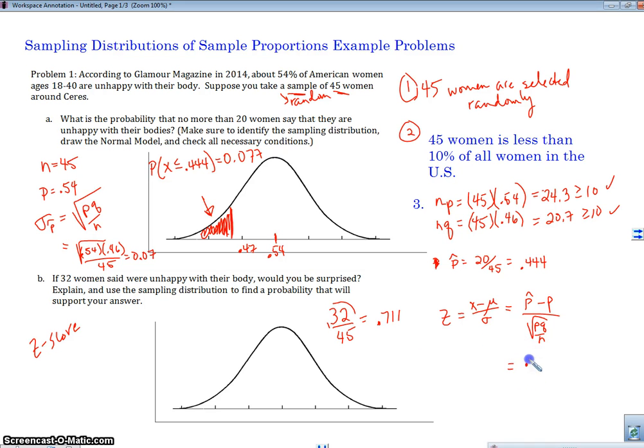So we're going to calculate that out. We're going to have 0.711, that's what we're trying to figure out, minus 0.54, that's from our population, divided by 0.07, we figured this out already over here. And what do we get when we do all that math? 2.44.